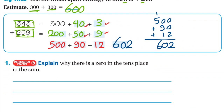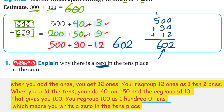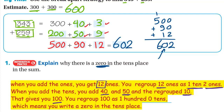Here we have a question: explain why there is a zero in the tens place in the sum. When you add the ones, you get 12 ones. You regroup the 12 ones as one ten and two ones. When you add the tens, you add 40 and 50 and the regrouped ten, giving you 100. You can't write 100 at the tens place, so you regroup as 1 hundred and zero tens — which means you write a zero in the tens place.